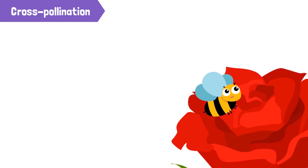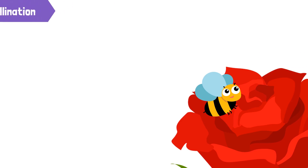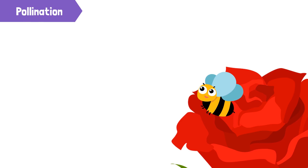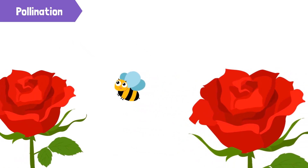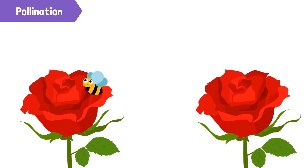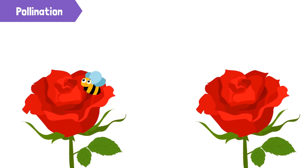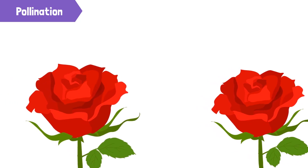Honeybees are attracted to the flowers due to the bright colors of their petals. When the pollinator lands on a flower, the hair on the legs of a pollinator picks up pollen grains. As the bee travels to another flower, it leaves behind some of the pollen when it stops there.